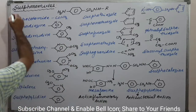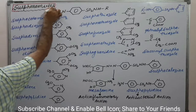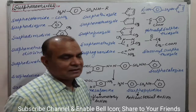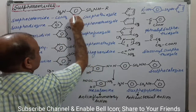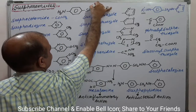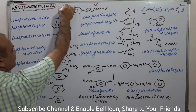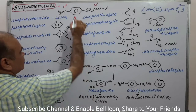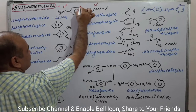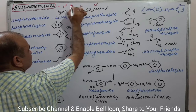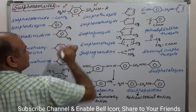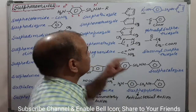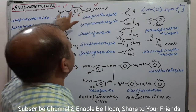Sulphonamides belong to the antibacterial category. In the sulphonamide structure, we note the two nitrogen positions as N1 and N4. The numbering of the benzene ring system is 1, 2, 3, 4, 5, and 6. N1 carries the sulphonamide group and N4 carries the amino group.